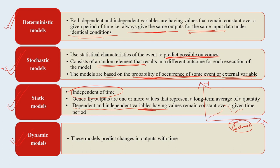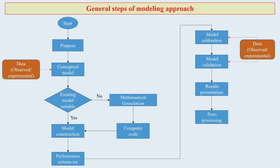Dynamic models predict changes in outputs with time - time is a critical variable here. With time there will be change, so you have to use dynamic models which capture time variability in your observations in that particular system. Now let us come to the general steps which we mostly follow in the modeling approach. We have discussed around 10-11 models, and now let us look at the basic framework or skeleton of these modeling approaches.